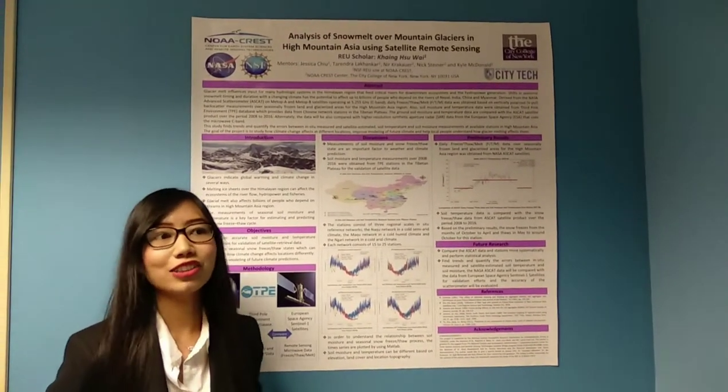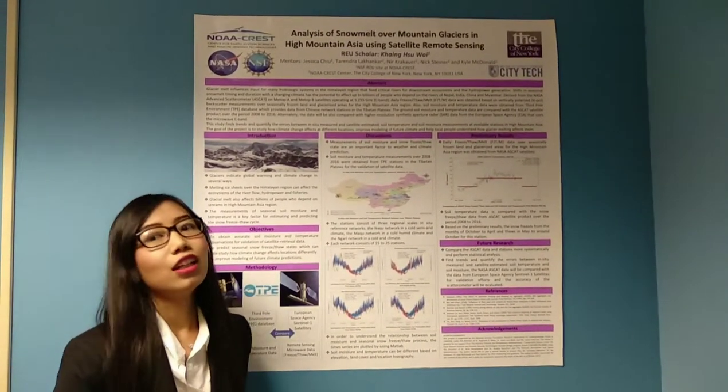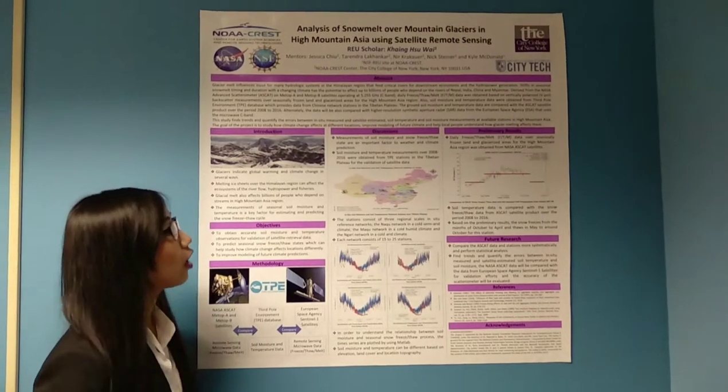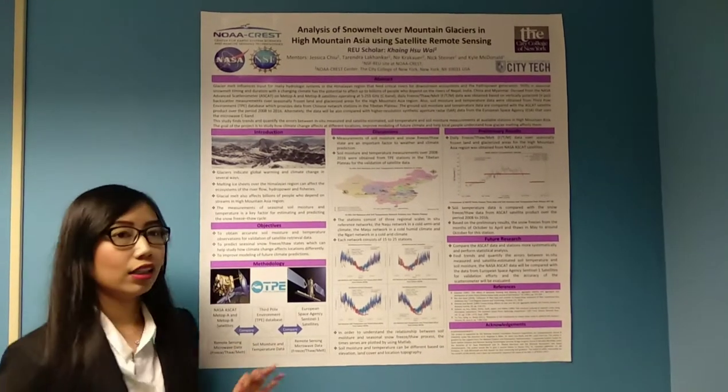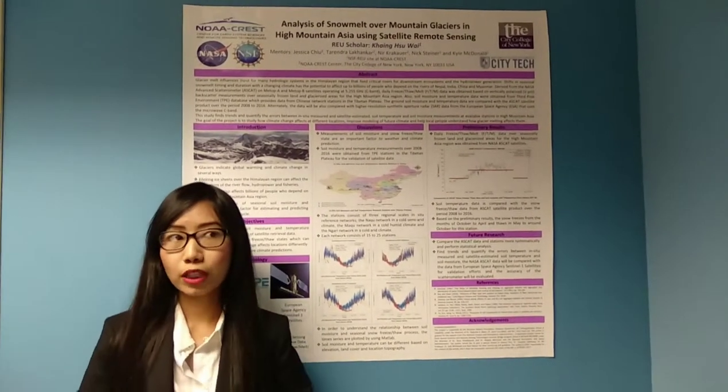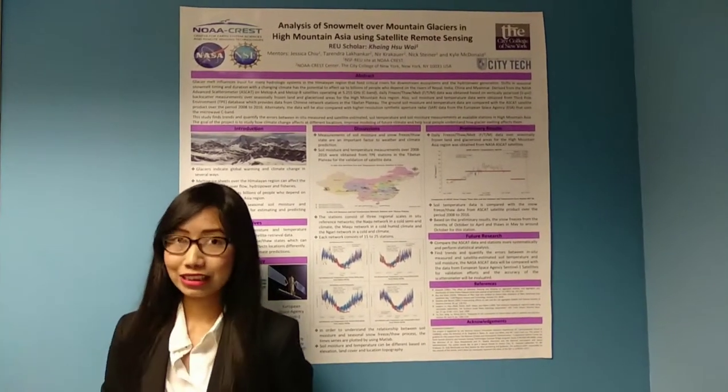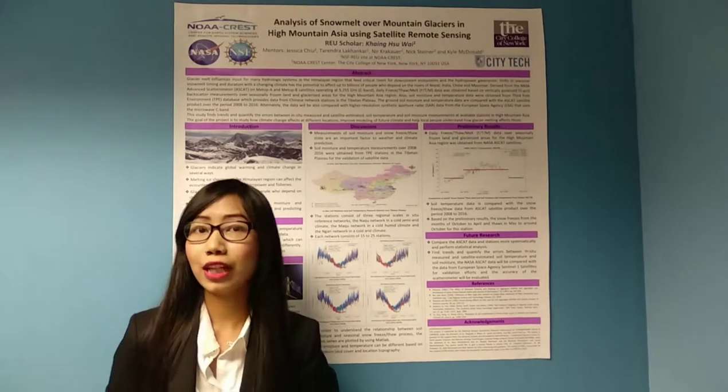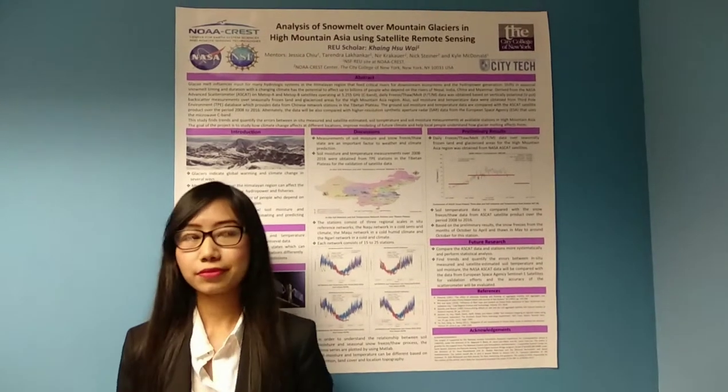So how are glaciers formed? Glaciers are formed when snow is turned into ice because more snow has fallen onto it and compressed it into solid ice.